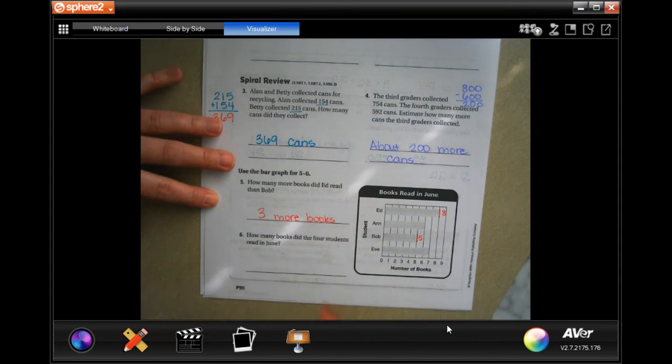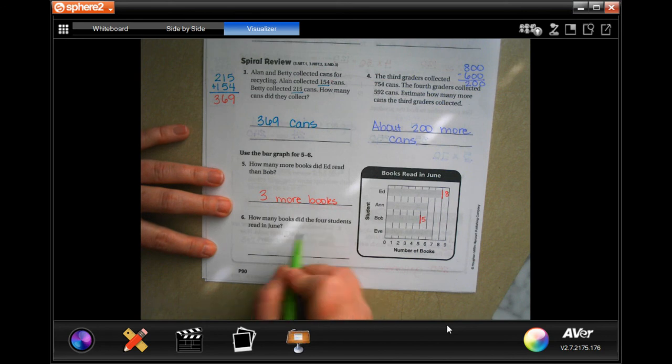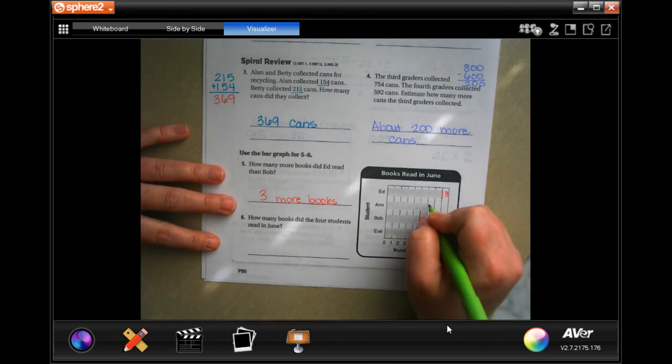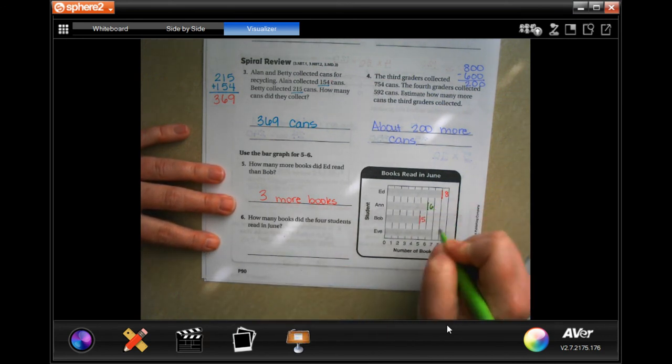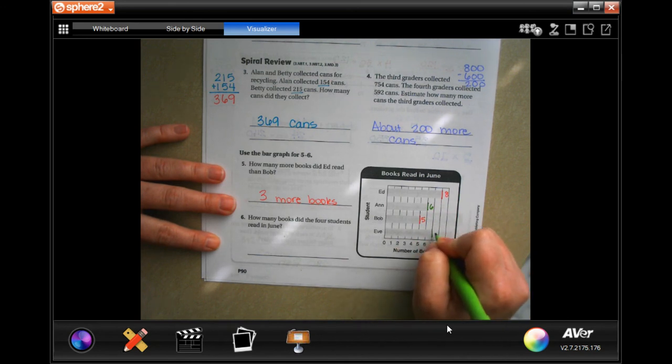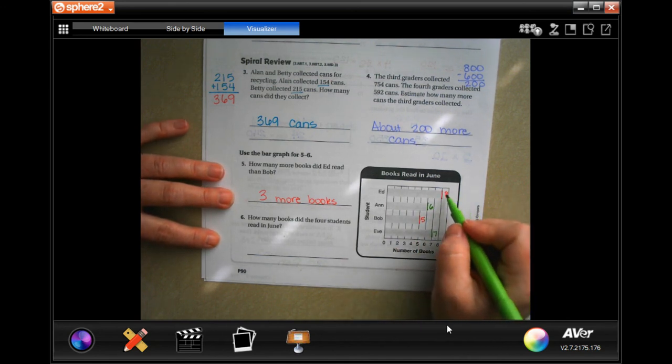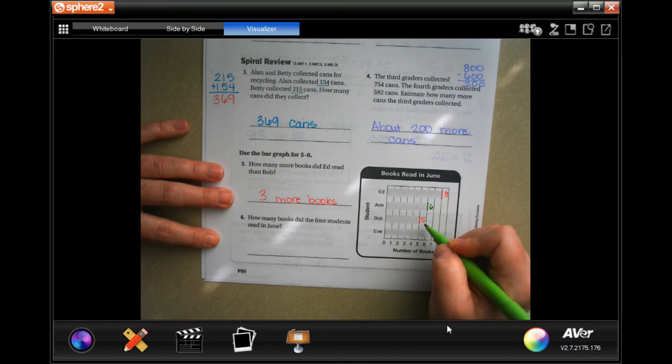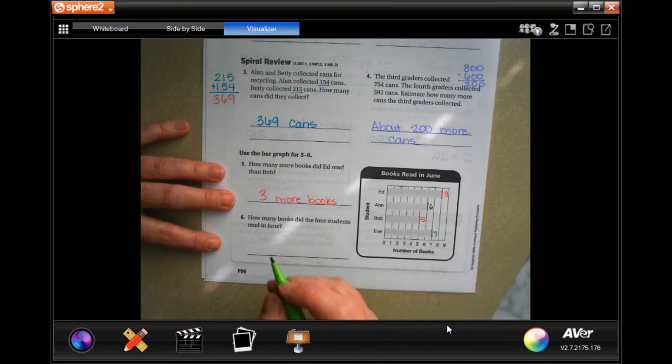Word problem, word answer, guys. How many more books did the 4 students read in gym? So we need to add them all up now. Ed is at the 8th. Eve is at the 7th. So 8 plus 6 is 14. Plus 5 is 19. Plus 7 is 26 books.